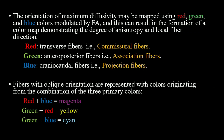The orientation of maximum diffusivity may be mapped using red, green, and blue colors modulated by fractional anisotropy, resulting in a color map demonstrating the degree of anisotropy and local fiber direction. The red fibers are transverse fibers, which are commissural fibers. The green fibers are anteroposterior fibers, also called association fibers. The blue fibers are craniocaudal fibers, also called projection fibers. Note that this is the standard color coding convention, but not always the same.